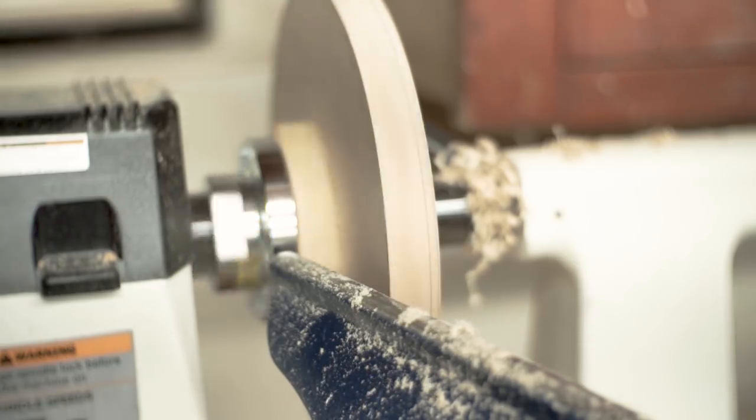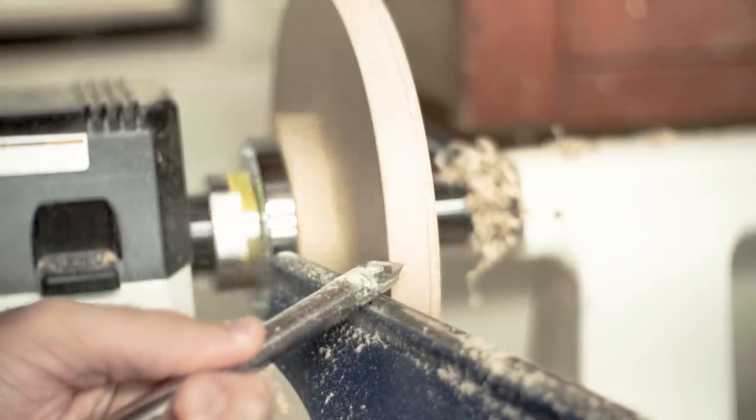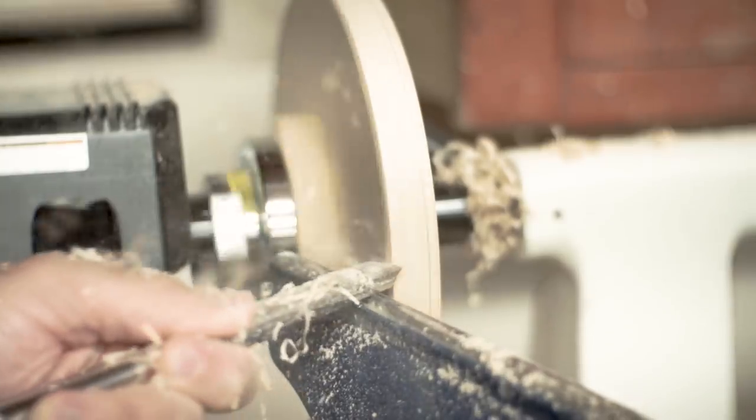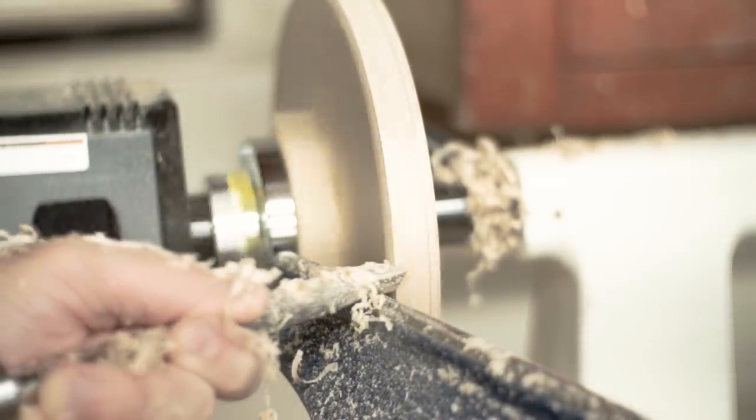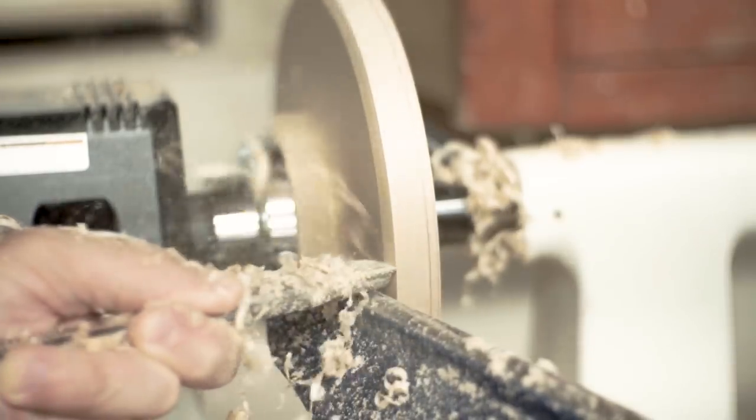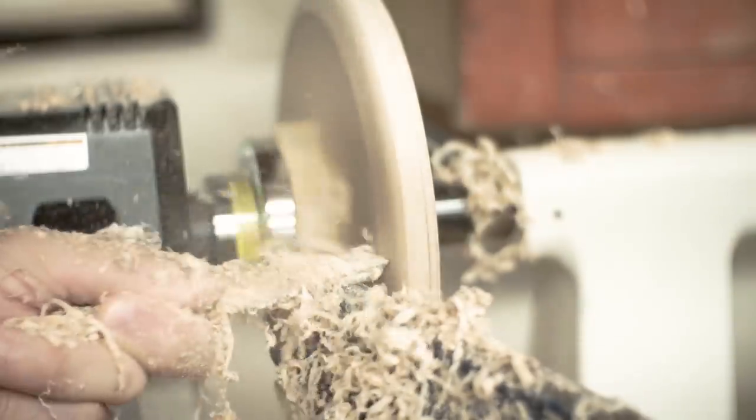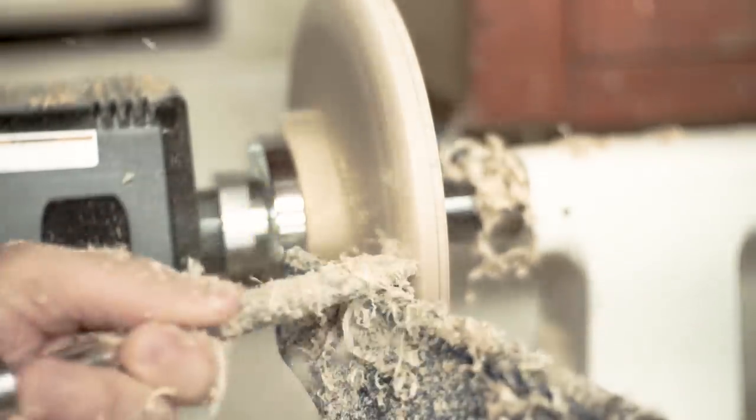Now I'm starting that final turn on the outside, on the top of the disc. Just started hogging that all out. Some of them turned out a little bit better than others. Some were maybe a little bit thicker. That lip on the outside is actually a little bit thinner than you think. So you just got to keep taking it off.